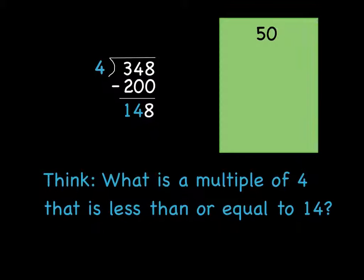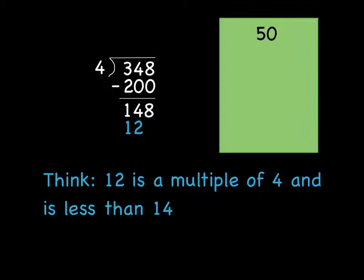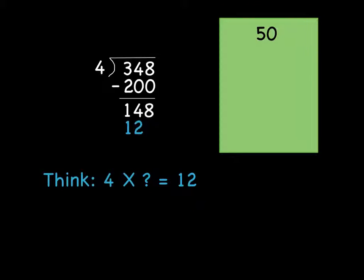So again, we're going to think, what is a multiple of 4 that is less than or equal to 14 this time? Just treat it as 2 digits. Ignore the 8. Well, 12 is a multiple of 4, and it's less than 14. So we'll put 12 down here. 4 times what number is 12? That's a pretty easy one, 4 times 3. So I'm going to add 3 in our answer box.